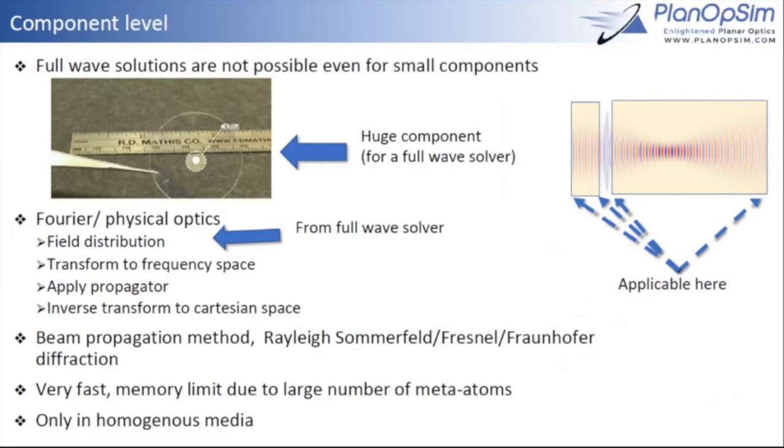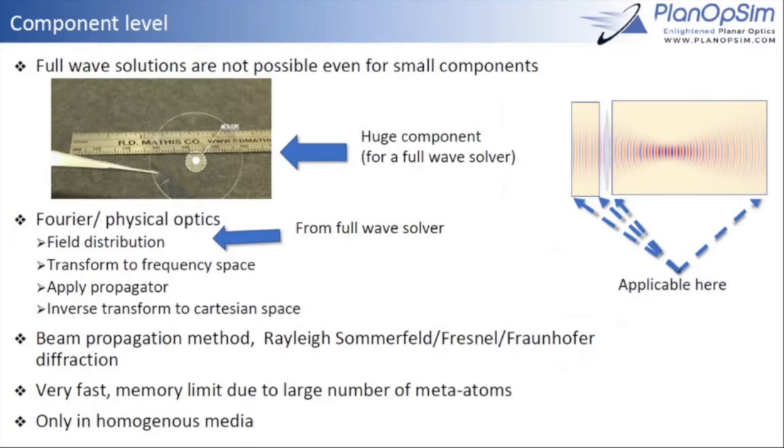In component level, like I said, we use RCWA, we use propagation optics because this, it looks tiny if you found the ruler, only a couple of millimeters, but this is actually a huge component when you consider a full wave calculation. So some approximation is needed.